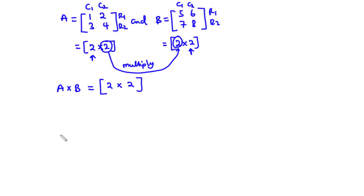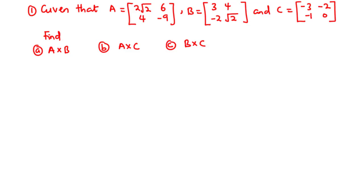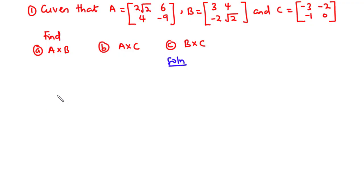Having this in mind, let's try some examples. For example 1, given that matrix A is [2√2, 6; 4, −9], matrix B is [3, 4; −2, √2], and matrix C is [−3, −2; −1, 0], we are going to find: A) matrix A times B, B) matrix A times C, and C) matrix B times C.